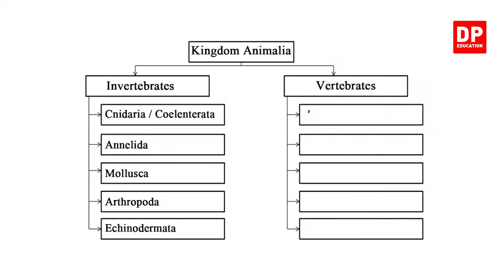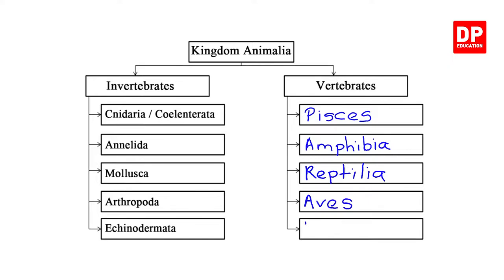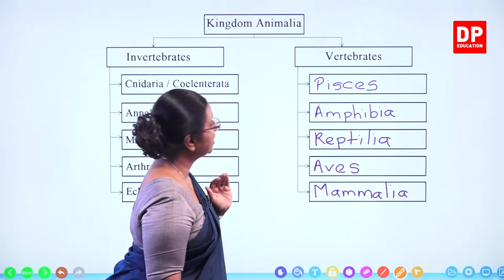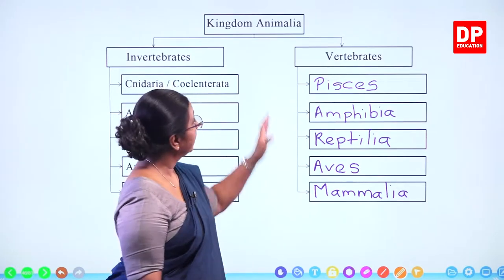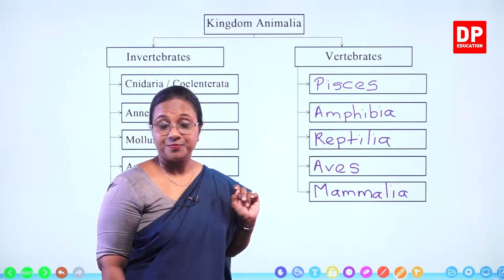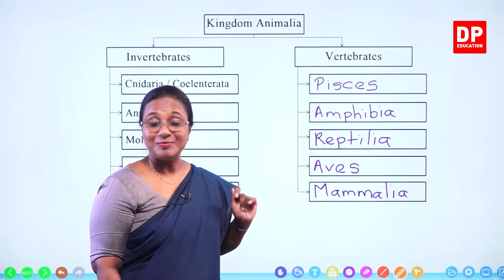What are the vertebrates? We have fishes, then amphibia, reptilia, reptiles, aves, birds, and mammalia, mammals. We will be looking at each of these groups — the classes — in more detail. Under vertebrates, we have fishes, amphibia, reptilia, aves, and mammalia. With that, I will move on to the next slide.